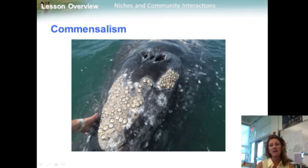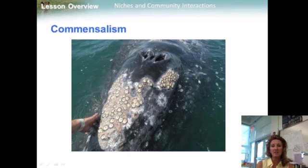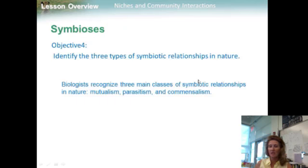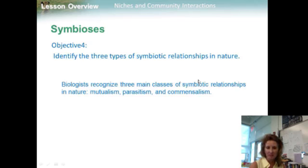Barnacles often attach themselves to whale skin. They perform no known service to the whale, nor do they harm it, yet the barnacles benefit from the constant movement of water full of food particles past the swimming whale. This is an example of commensalism — a relationship in which one organism benefits and the other is neither helped nor harmed. So the three types of symbiotic relationships are mutualism, parasitism, and commensalism.